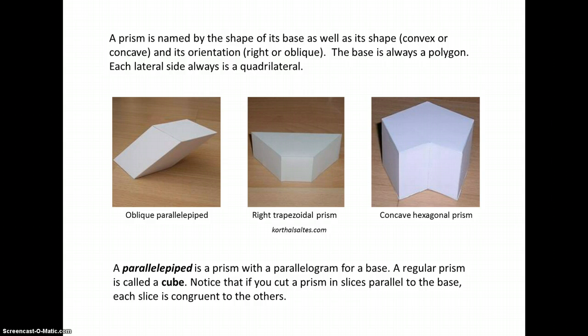A prism is named by the shape of its base, as well as whether it's convex or concave, and its orientation, whether it's right or oblique. The base is always a polygon, and every lateral side is always a quadrilateral.